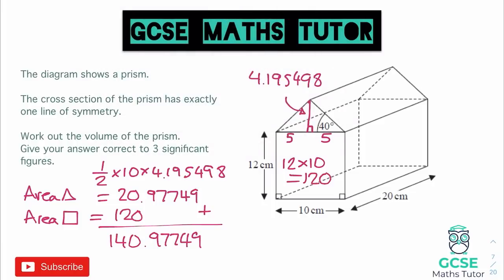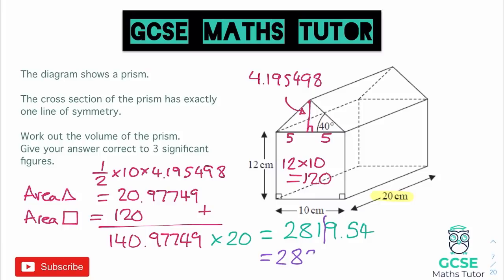I've had to use SOHCAHTOA to get the area of the triangle, but now I can work out the volume. Once I have the area of the cross section, I multiply it by the depth, and the depth is 20. So I press times 20 on the calculator, and that comes out as 2819.549. Rounding to three significant figures — after the 1 — that rounds up to give us 2820 centimeters cubed. And there is the volume of our compound shape.